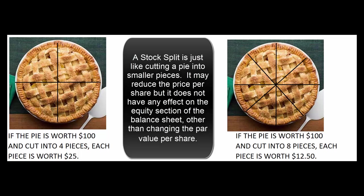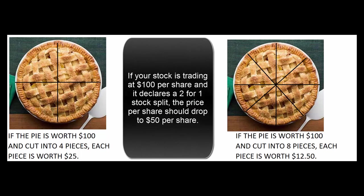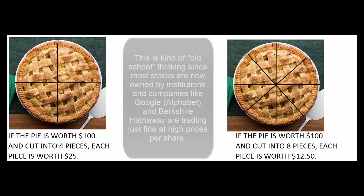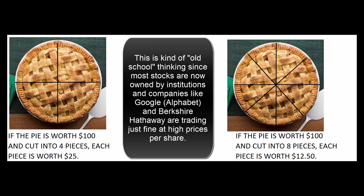It's the same thing with stock prices. If your company is trading at $100 a share and you split it two-for-one — so everybody who had one share before the split now has two shares after the split — the stock price should go from $100 down to $50, making it more marketable. Ever since Google and Warren Buffett's Berkshire Hathaway came along, that logic has been brought into question, as stocks seem to trade just fine in any particular price range.